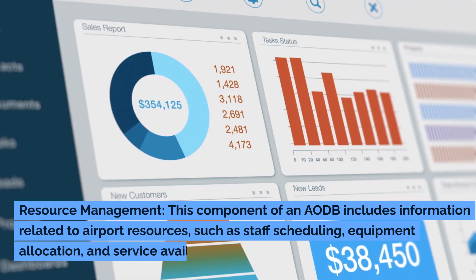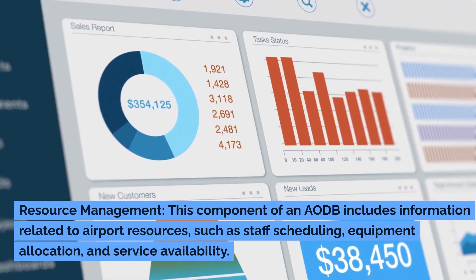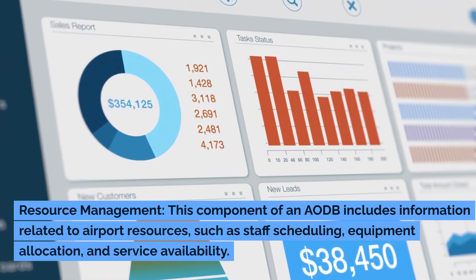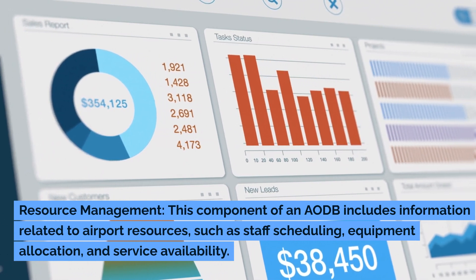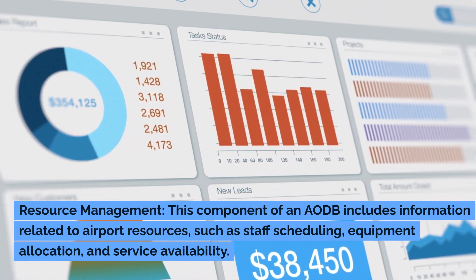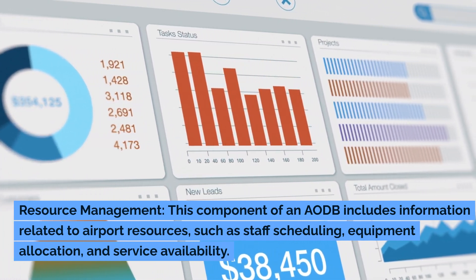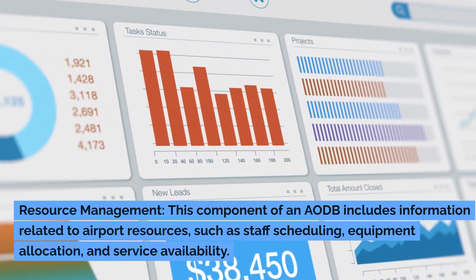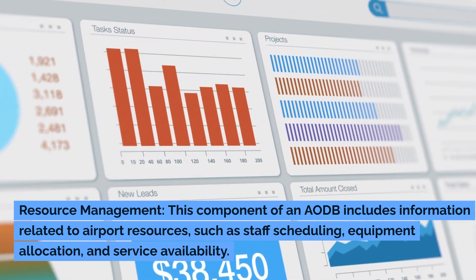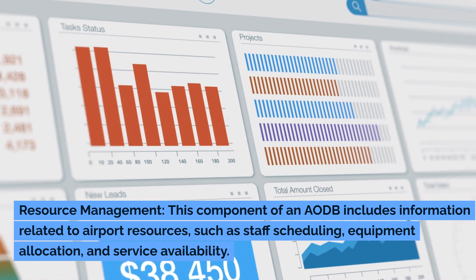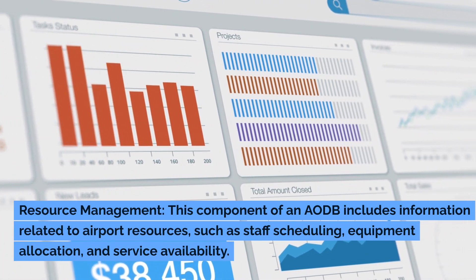The resource management component of an AODB includes information related to airport resources and services, such as staff scheduling, equipment allocation, and service availability.